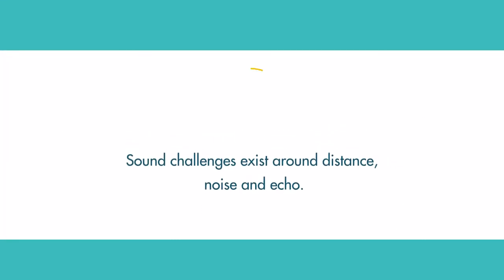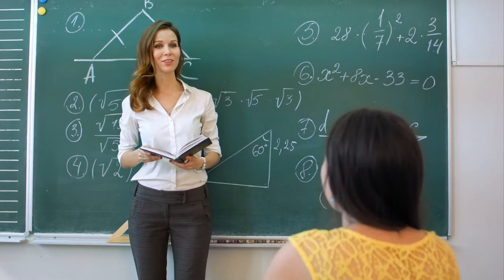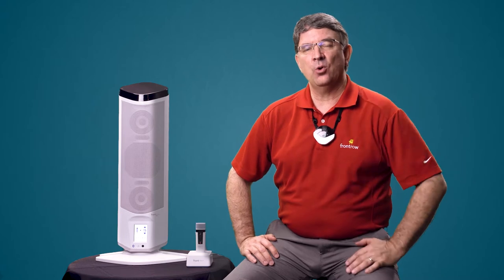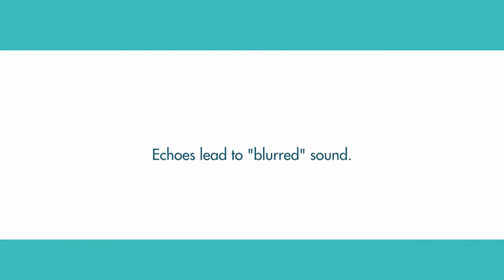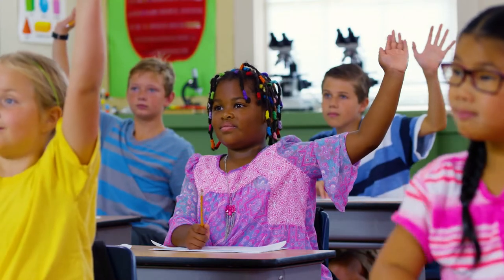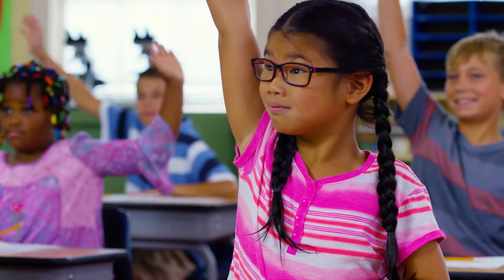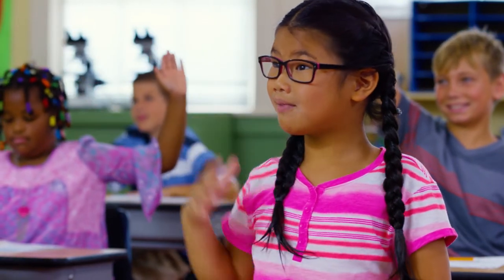Some of those problems are around distance, noise, and echo. The noise factor - HVAC, classes next door, the noise of the students - that's something to be overcome. And then echo: if your classroom isn't carpeted, there's a lot of blurring of the sound that goes on because of that. So these things have been with us for a long time. There are a lot of challenges in getting sound into the classroom and into the kids' ears and brains.